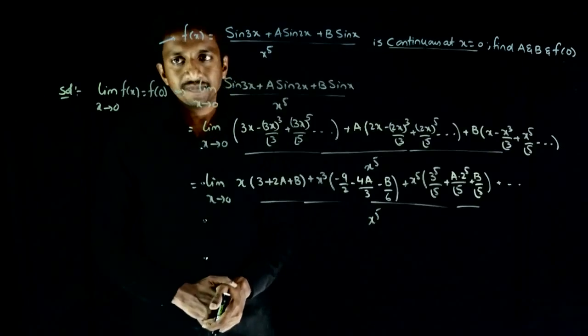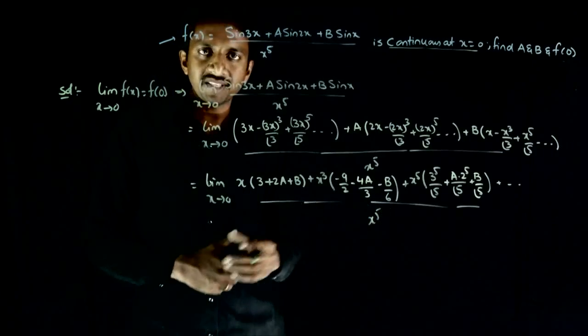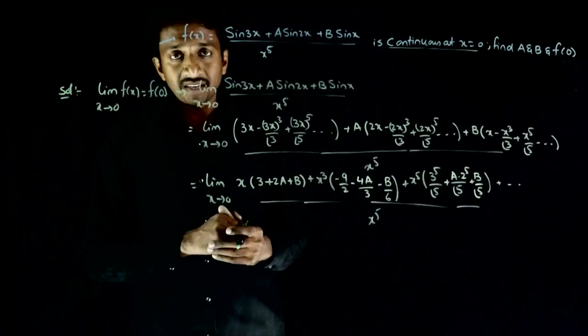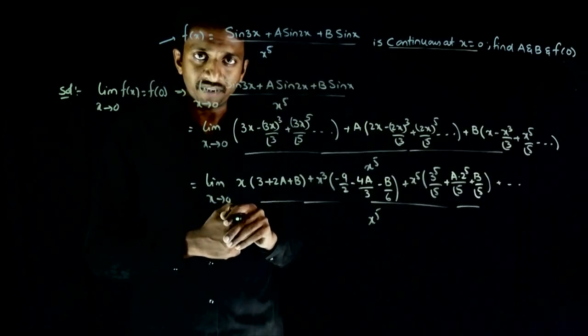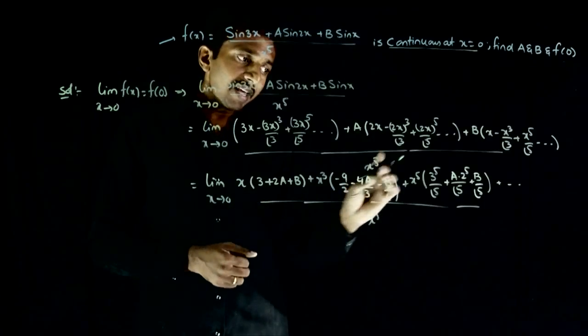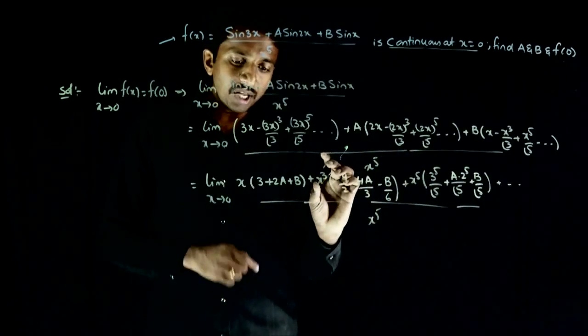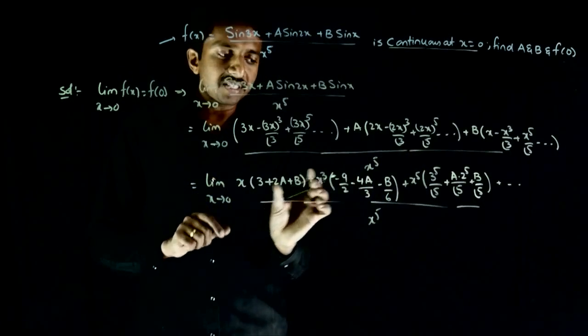Now start the analysis. In the denominator the least power is x power 5. So if this limit has to be finite, in the numerator the least power of x has to be x power 5. This means the powers smaller than x power 5, their coefficients should be zero.